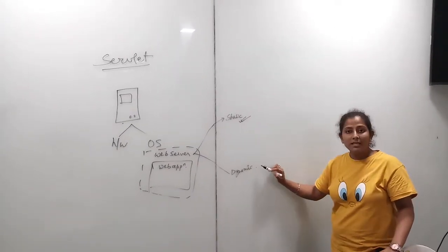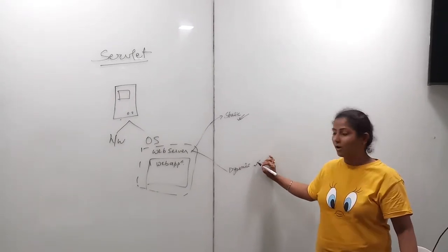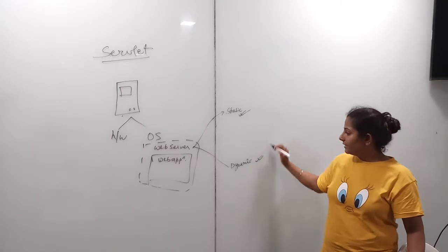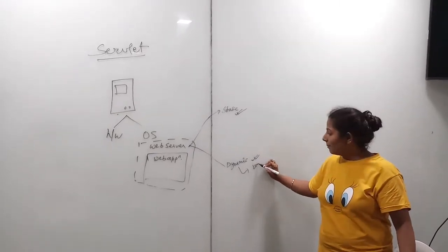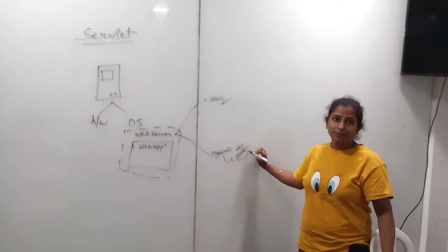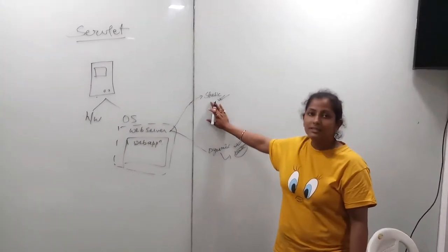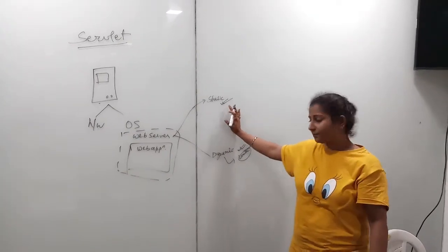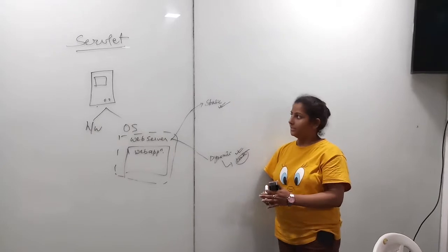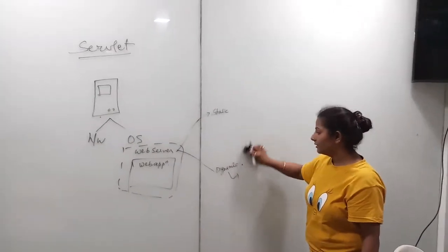When the request, if response is generated at the time of the request, then it is called as dynamic web server. For example, for dynamic you can see as a bank example, when you ask for a mini statement, it will generate at the run time only. And for static, most of the websites use the dynamic approach nowadays and the static one is already available on the service.